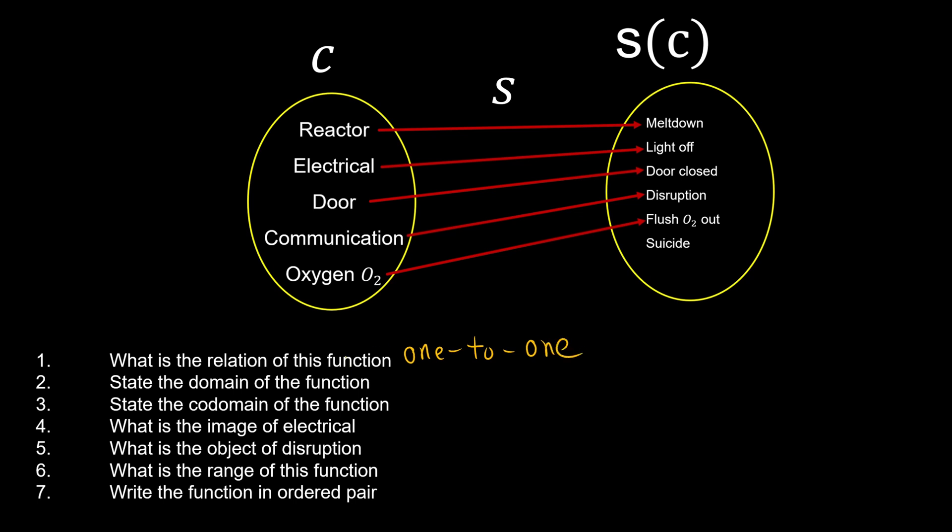State the domain. So again, how to write down domain? It's going to put in a set. A set consists of reactor, electrical, door, communication, and oxygen.